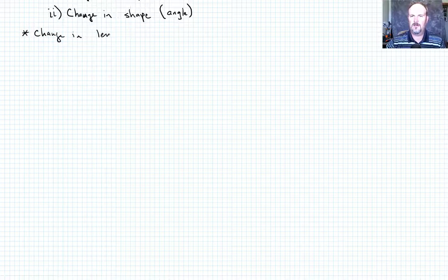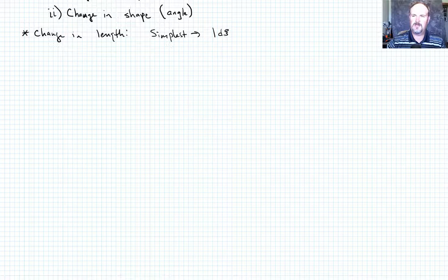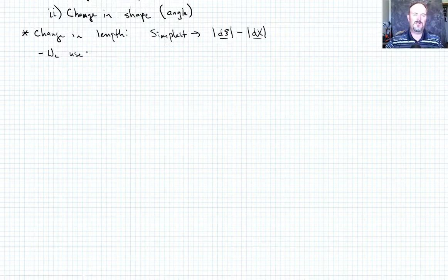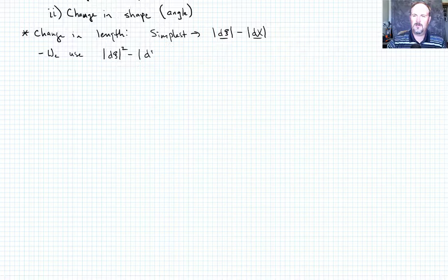The most simple way we could describe change in length, here I'll just say simplest, is just the quantity |dx| minus |DX|, right? The magnitudes. That would be the easiest form for change in length. We're going to use, and this is out of convention and also becomes more convenient to actually use with tensor quantities, the quantity |dx|² minus |DX|², right? That's still a measure of the change in length. It's just not a linear measure of the change in length.